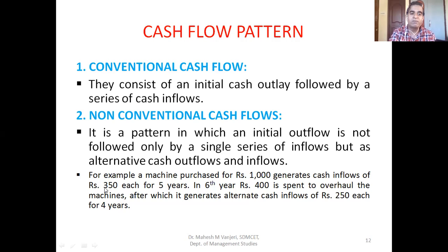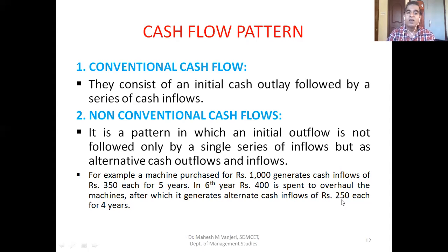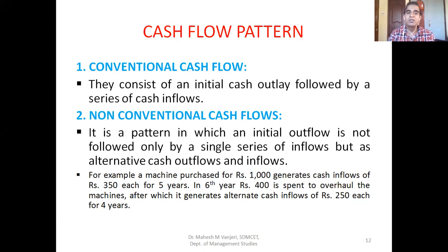In the sixth year, 400 rupees are spent to overhaul the machine. Overhauling means replacing defective or old parts, oiling, greasing, and making the machine perform like new. After overhauling, it generates cash inflows of 250 rupees each for four years. Otherwise the machine would have stopped functioning after five years. This is an example of non-conventional cash flows.